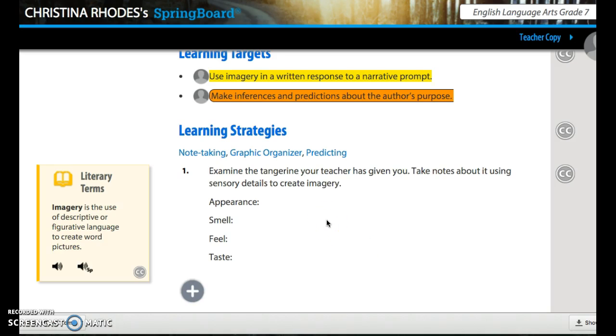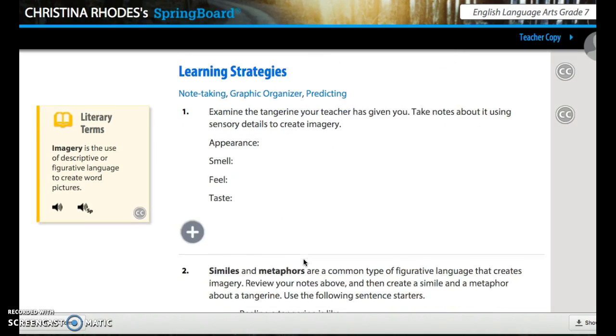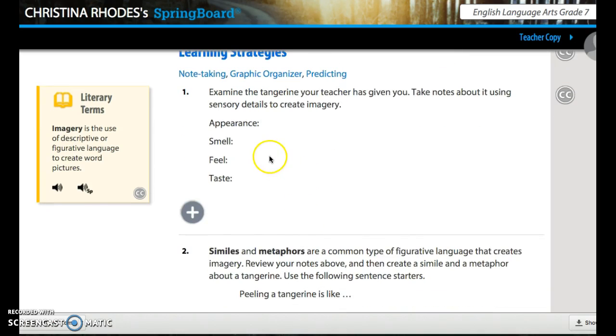She's going to give each group a tangerine. And you're going to write down the appearance. What do you see? The smell. Once you peel it a little bit. The feel. What does it feel like? And what does it taste like? So each person in your group is going to help with appearance, smell, feel, especially as you're peeling a little bit. And then the taste.